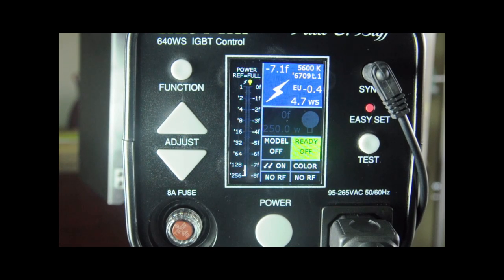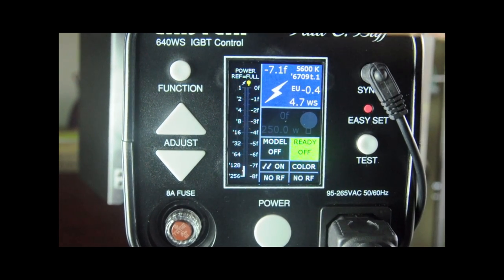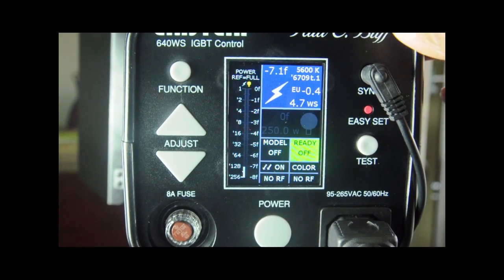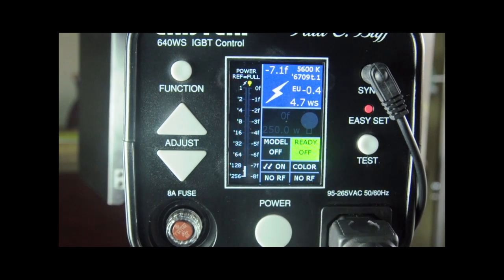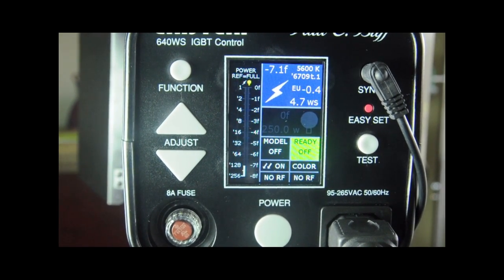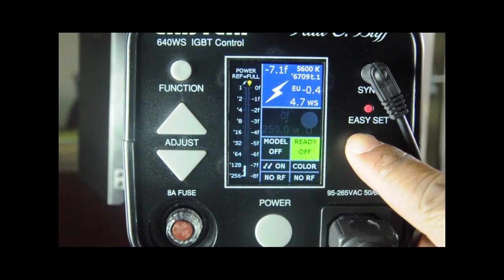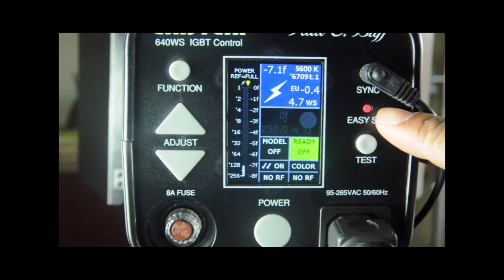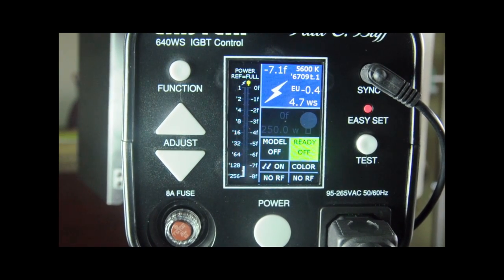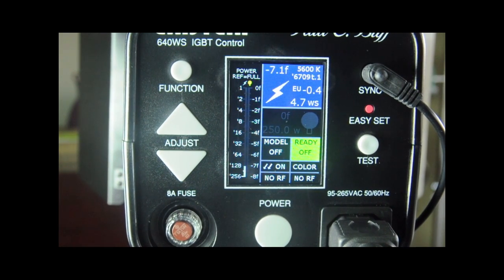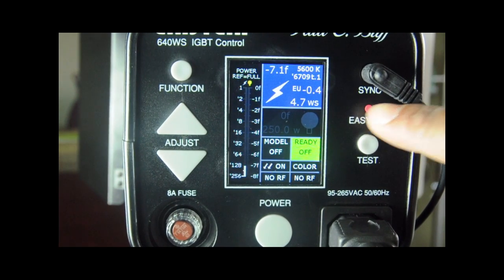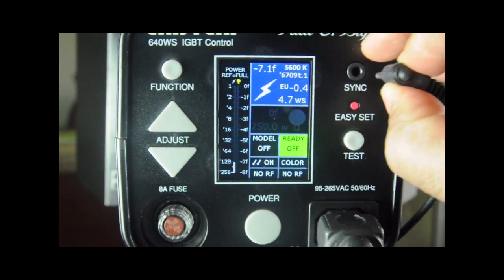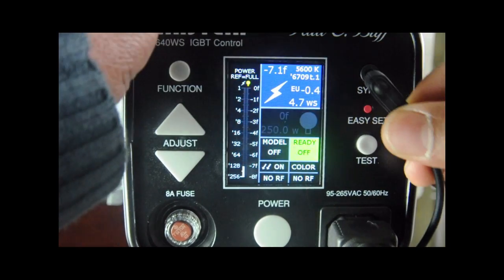Here on the left side we've got our function button and two arrows that adjust through the menu. Our LCD screen here is about two inches by three inches, a nice four-color screen. There's a test button which we can fire the strobe, and here we've got the little red Easy Set button. What that does is return the strobe to its factory default settings, so if you make a lot of changes, you have one button push to get back to a standard setting.